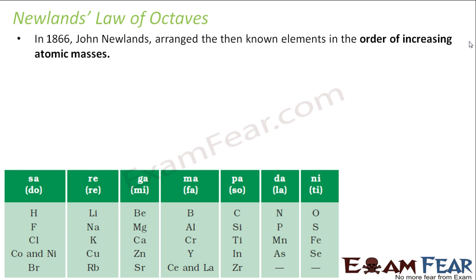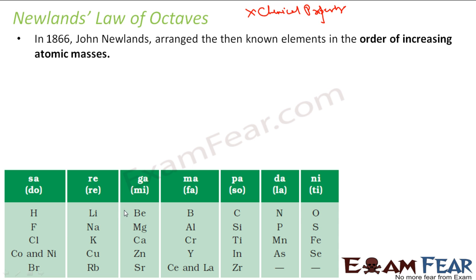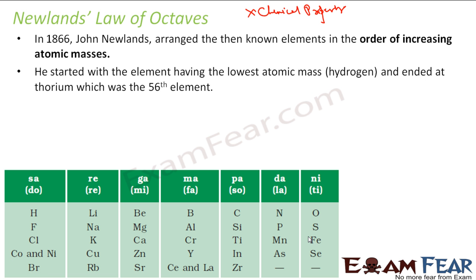Then came Newlands, who gave the Law of Octaves. What he did was arrange the elements based on atomic mass — he was not bothered about the chemical properties. For example, hydrogen, lithium, beryllium, boron, carbon — all these are arranged in increasing order of atomic mass.